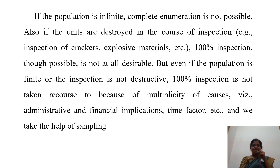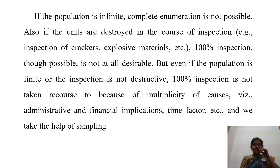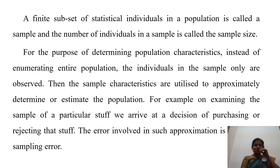If the population is finite, complete enumeration is not possible. So the samples are selected for the purpose of inspection. For example, inspection of products in government contracts — 100% inspection is not possible. Even if the population is finite and inspection is not restricted, 100% inspection is not practical due to the cost and multiplicity of the process. The finite statistical degree of diversification of the population and the number of individuals in the population are considered.